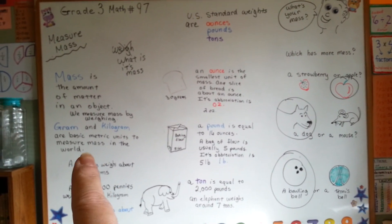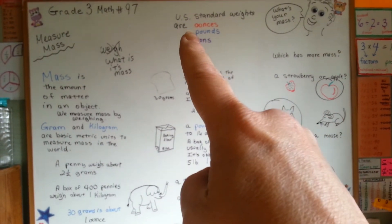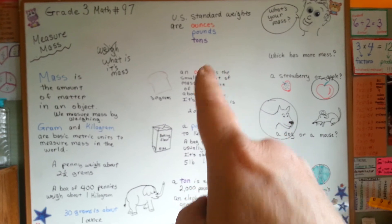Remember, the metric system has grams and kilograms, and standard US measurements have ounces, pounds, and tons.